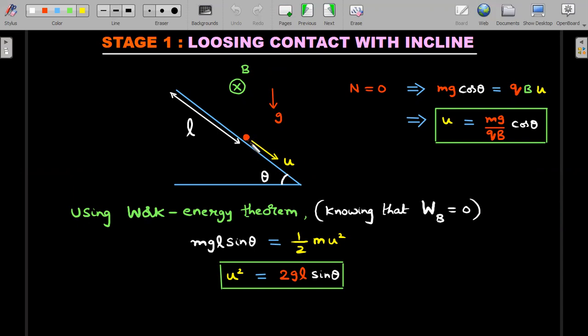As I discussed in the previous video, there are two stages. First stage is common for any of the three methods. You need to know at what point the contact is lost. Losing contact is nothing but normal reaction being zero for this particle after sliding through distance l.